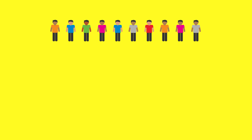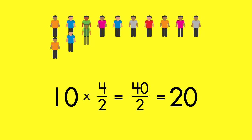When the factor is a mixed number, or an improper fraction that is greater than one, the number will get larger. The product of ten and four-halves is twenty.